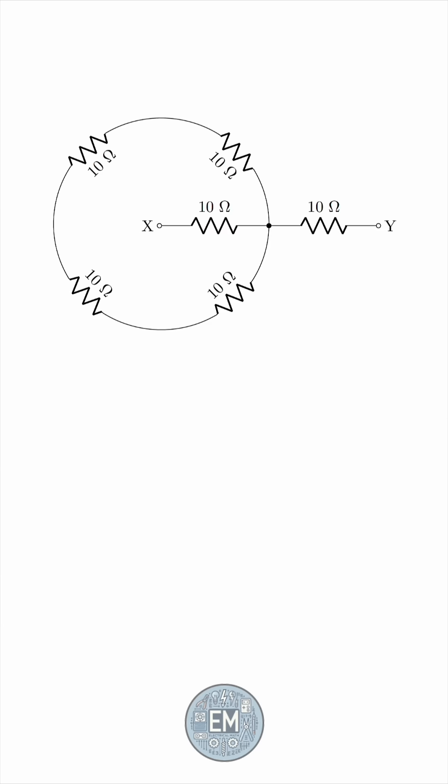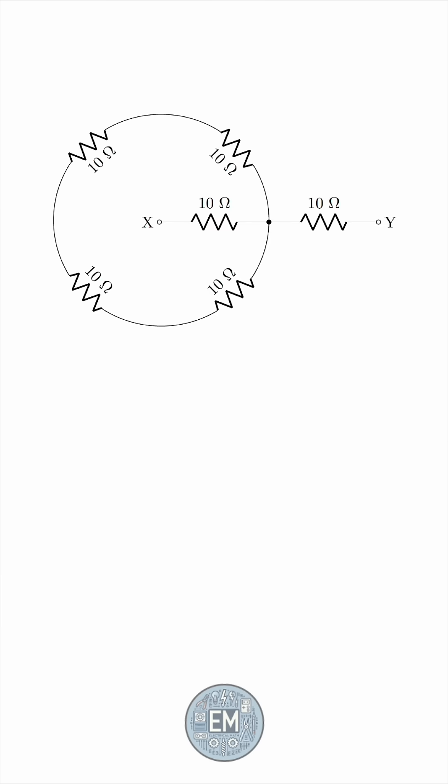We can start with the obvious simplification. The four 10-ohm resistors in the circular path are in series, so we can lump them together in a single 40-ohm resistor.